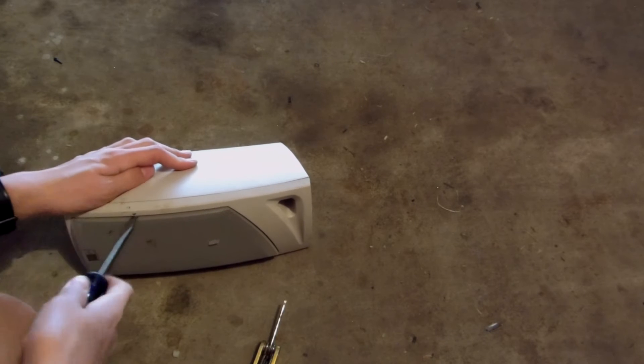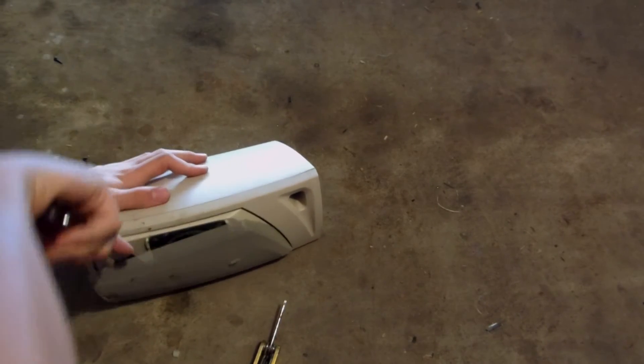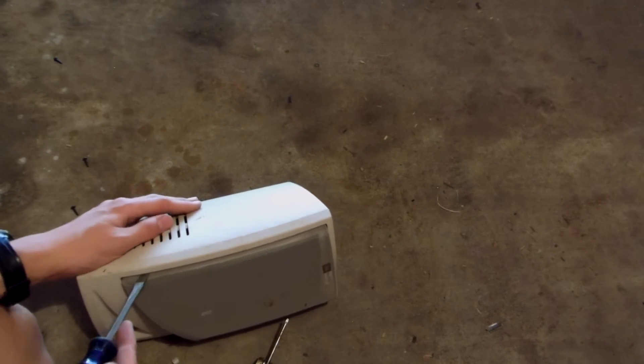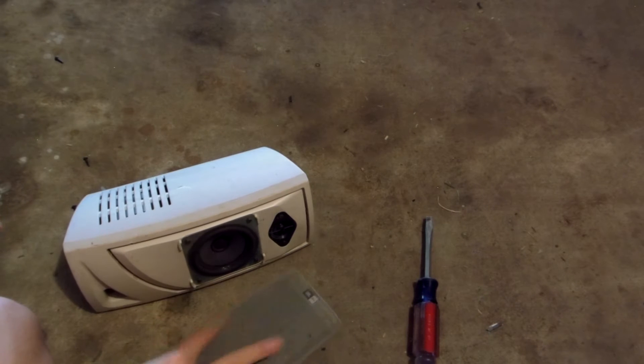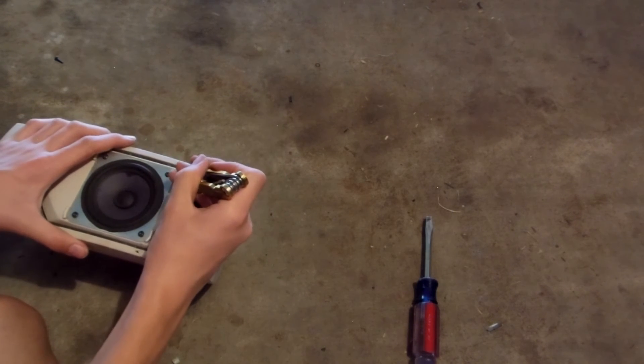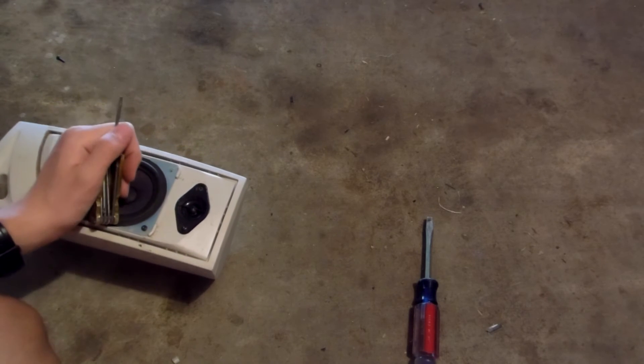Now for this one, the procedure will pretty much be the same. Just pull out the metal grill. Another piece of steel with some felt. And repeat the same procedure on the second speaker. Once you've pulled out both of them, I was able to pull out a whole bunch of insulation at the same time.